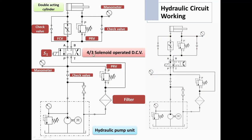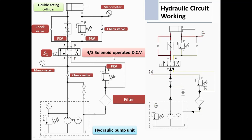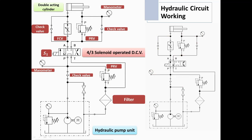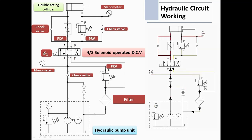Therefore it is a 4/3 valve — four ports and three positions: left envelope mode, central position, and right envelope mode. This is the solenoid operated direction control valve. The left envelope mode is obtained by the solenoid, hence it is known as a solenoid operated direction control valve.